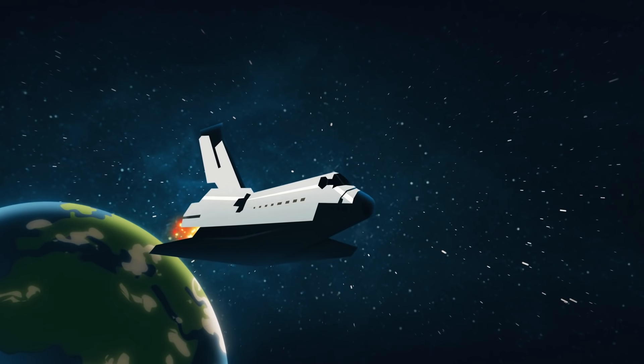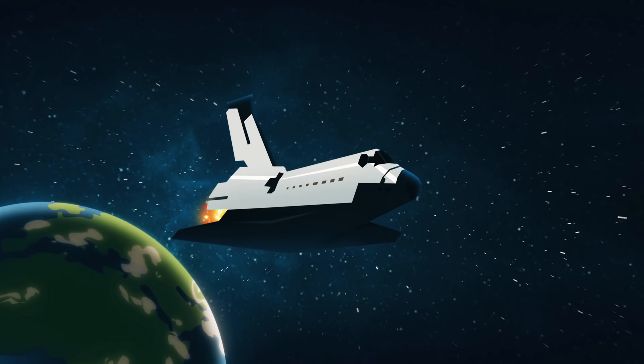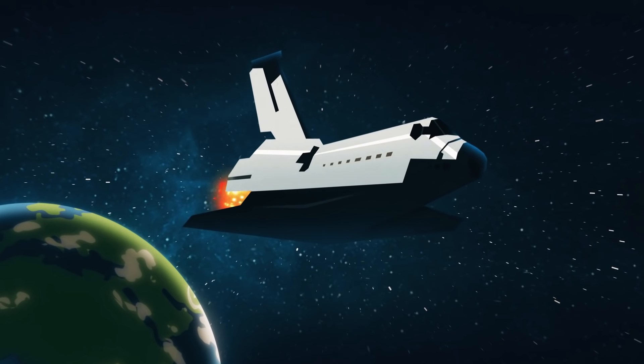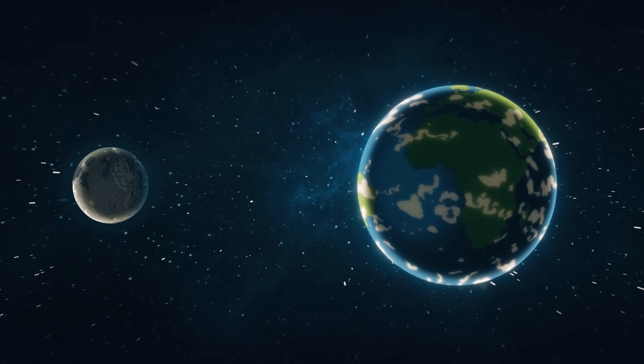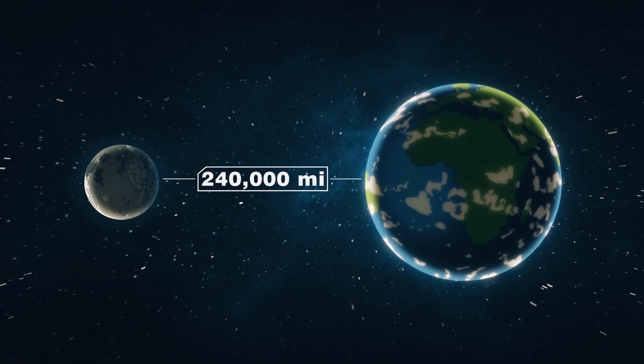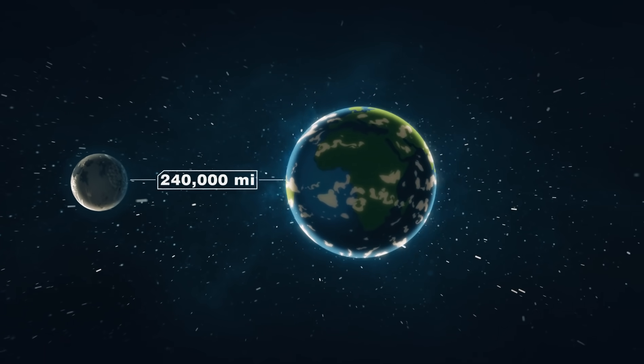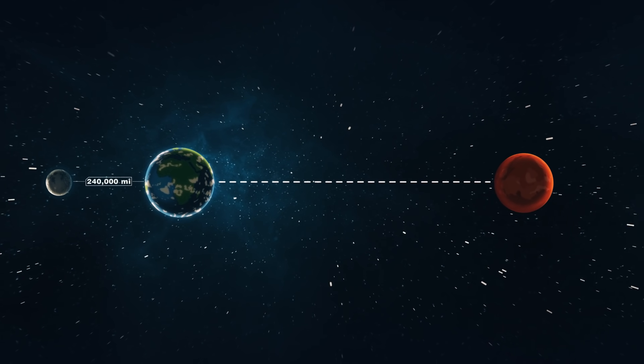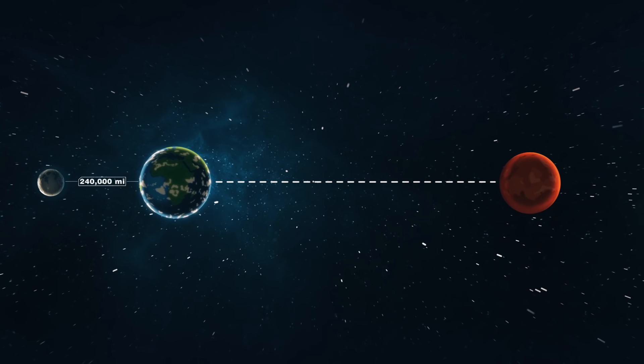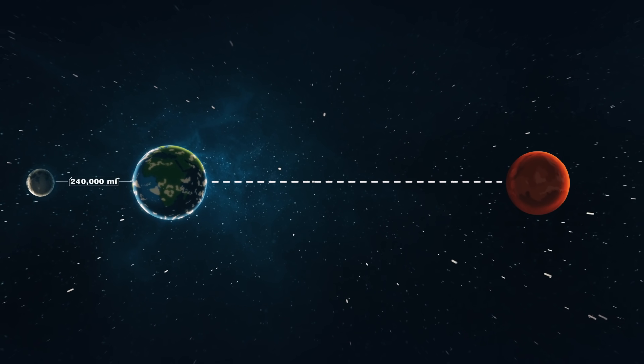Traveling such a vast distance creates an incredible hurdle for our limited technology. On average, the moon is about 240,000 miles away, a fraction of the distance between Earth and Venus. A shorter space flight opens up all kinds of possibilities.